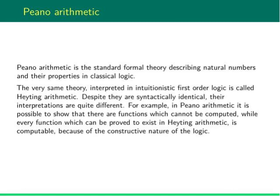Peano Arithmetic is the standard classical first-order theory to describe natural numbers. The same theory, interpreted in intuitionistic logic, is called Heyting Arithmetic. Despite they are the same set of formulae, they are very different in what they can prove.